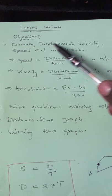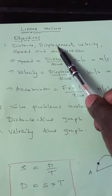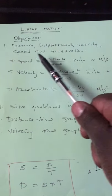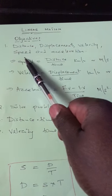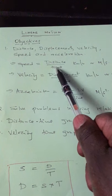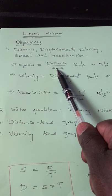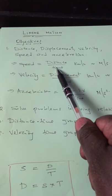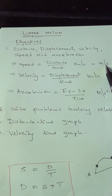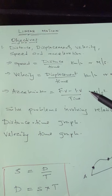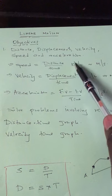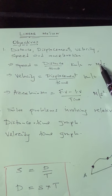After understanding distance and displacement and their differences, it comes to velocity and speed. Speed simply means distance per unit time. When we talk about speed, distance is involved, and the units will be kilometers per hour or meters per second. From your previous classes, you should know how to change kilometers per hour into meters per second. To change kilometers per hour into meters per second, you multiply the value by 1,000 divided by 3,600.